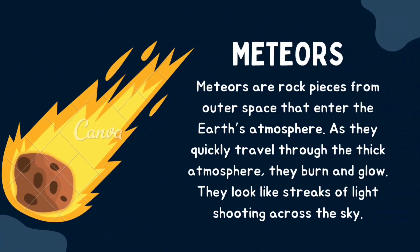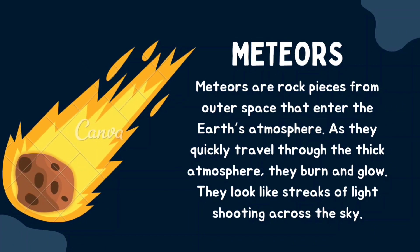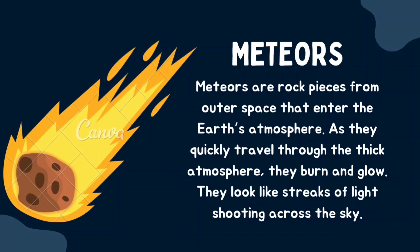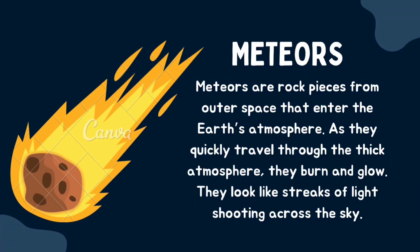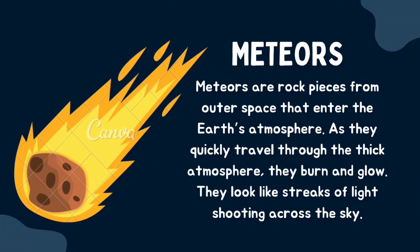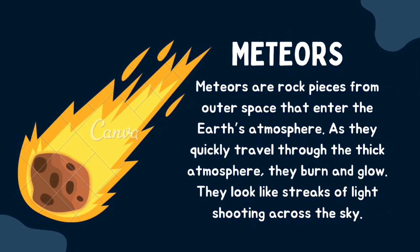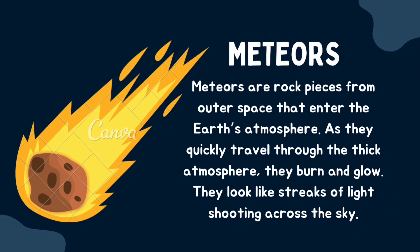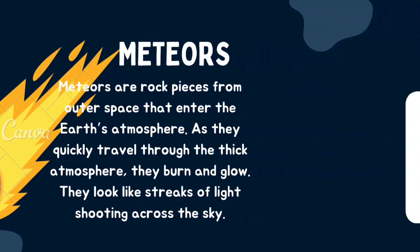Next, let's learn about meteors. Meteors are rock pieces from outer space that enter Earth's atmosphere. As they quickly travel through the thick atmosphere, they burn and glow. They look like streaks of light shooting across the sky, which is why they are also known as shooting stars.